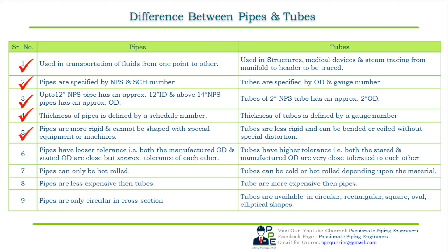Pipes are more rigid and cannot be shaped without special equipment or machines. On the other hand, tubes are less rigid and bending or coiling can be done without any special equipment. Pipes have looser tolerances — the manufactured and stated OD are close but approximate to each other. Pipes can only be hot rolled, whereas tubes can be cold and hot rolled depending upon the type of material.